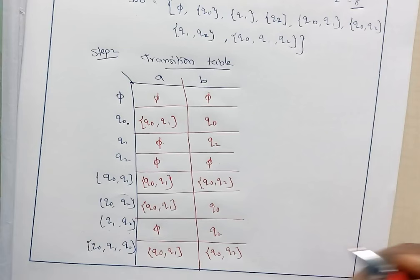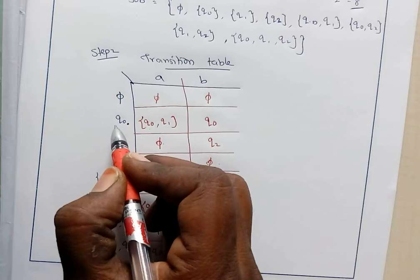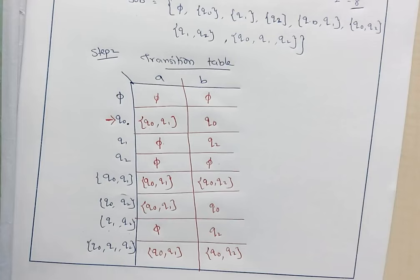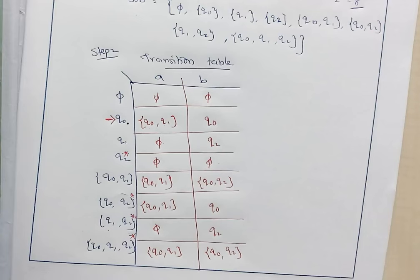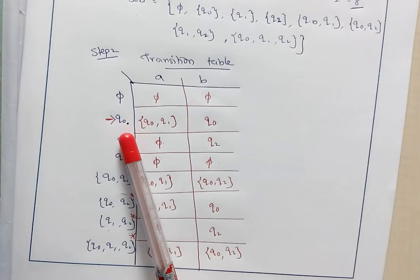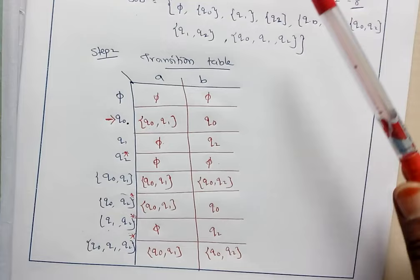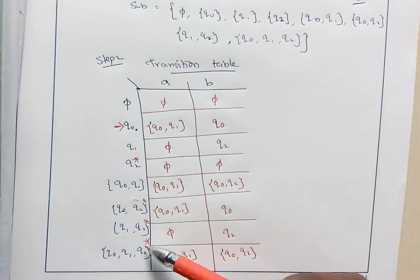Now we need to mark the starting and final states. Q0 is the starting state, so we indicate it. Q2 is the final state of the NFA, so wherever Q2 appears in a subset, that subset is marked as a final state. In an NFA or DFA transition table, there is only one starting state whereas there may be multiple final states.